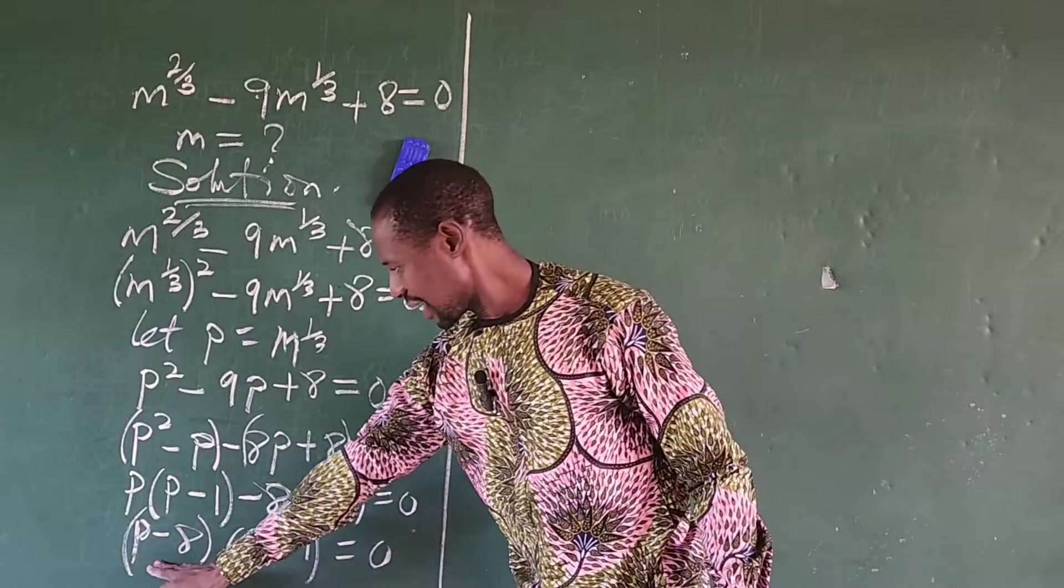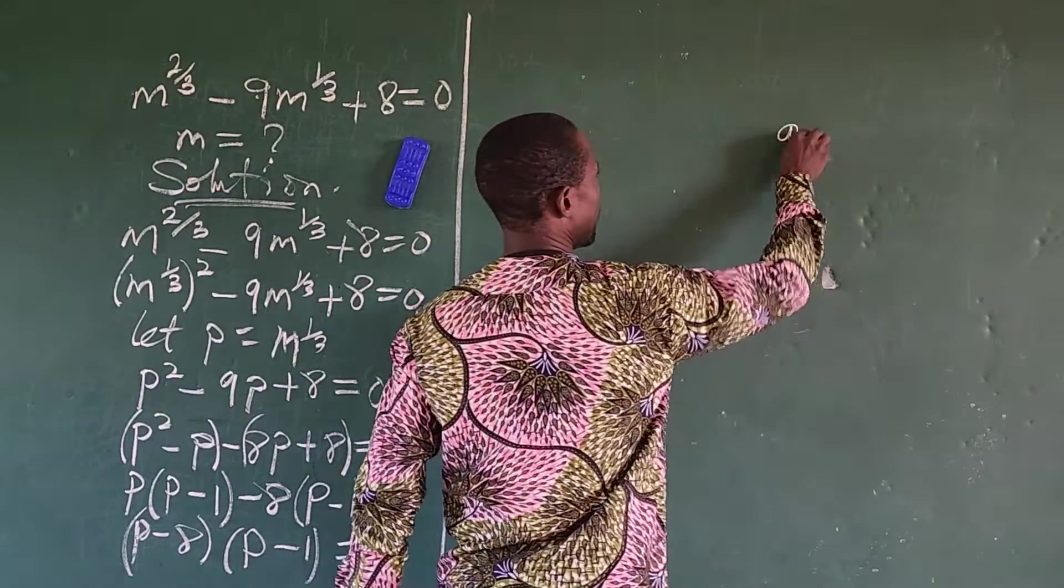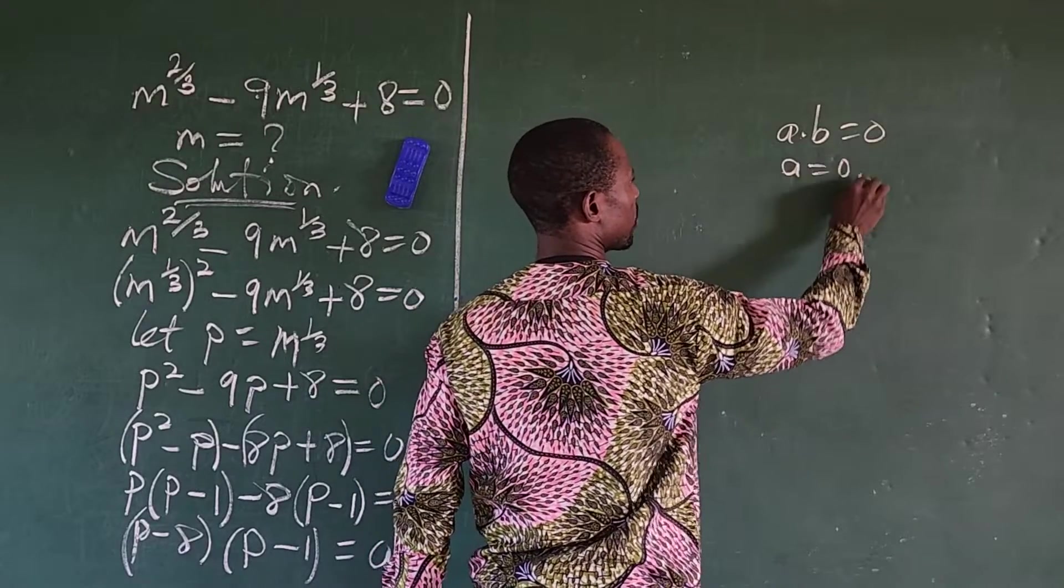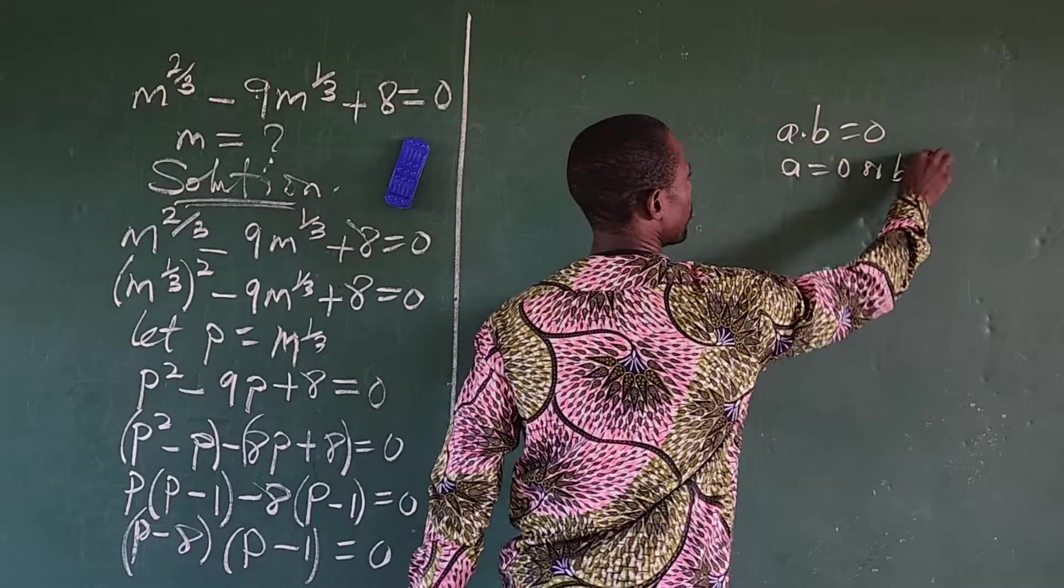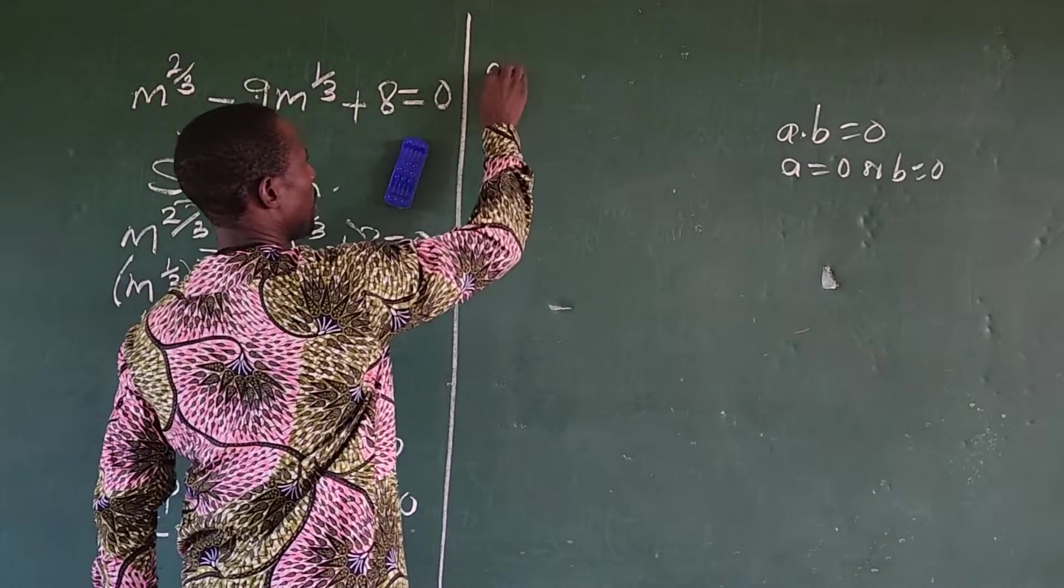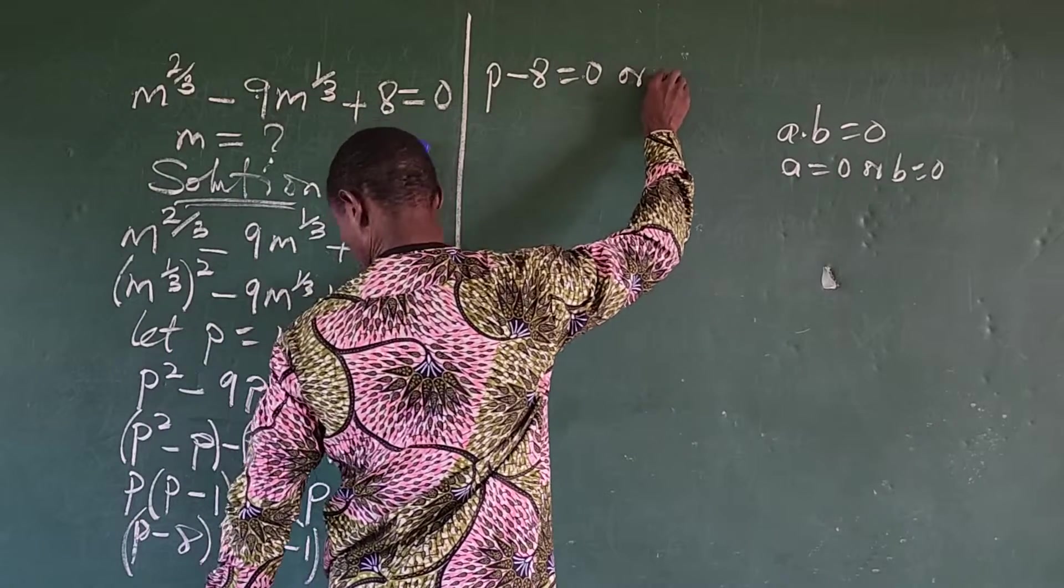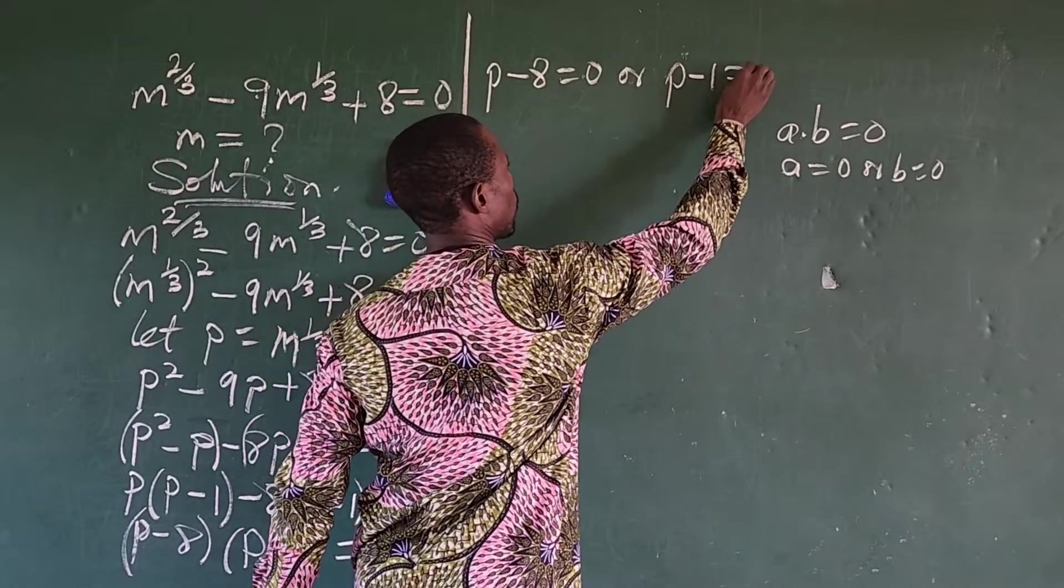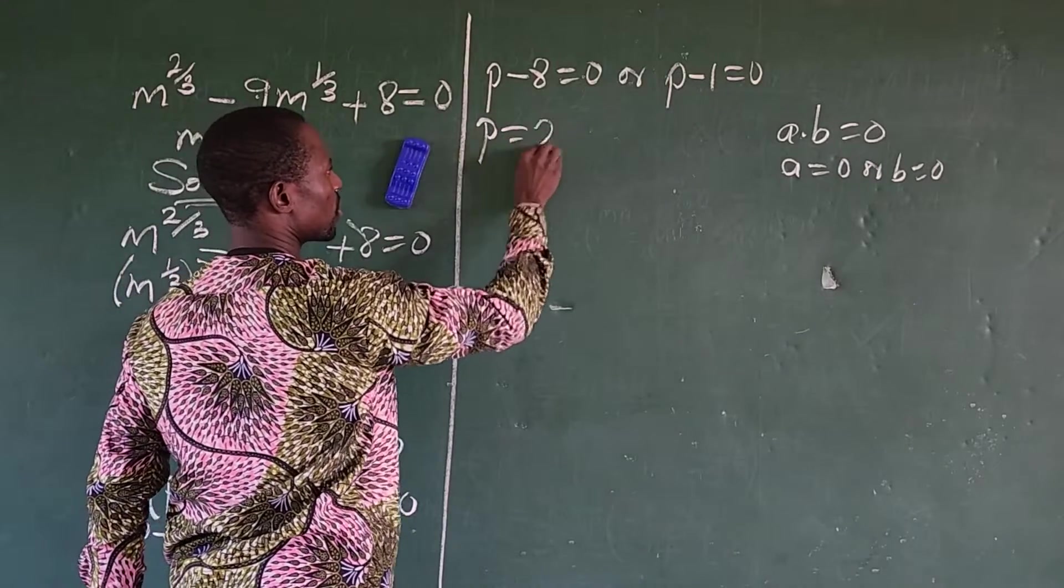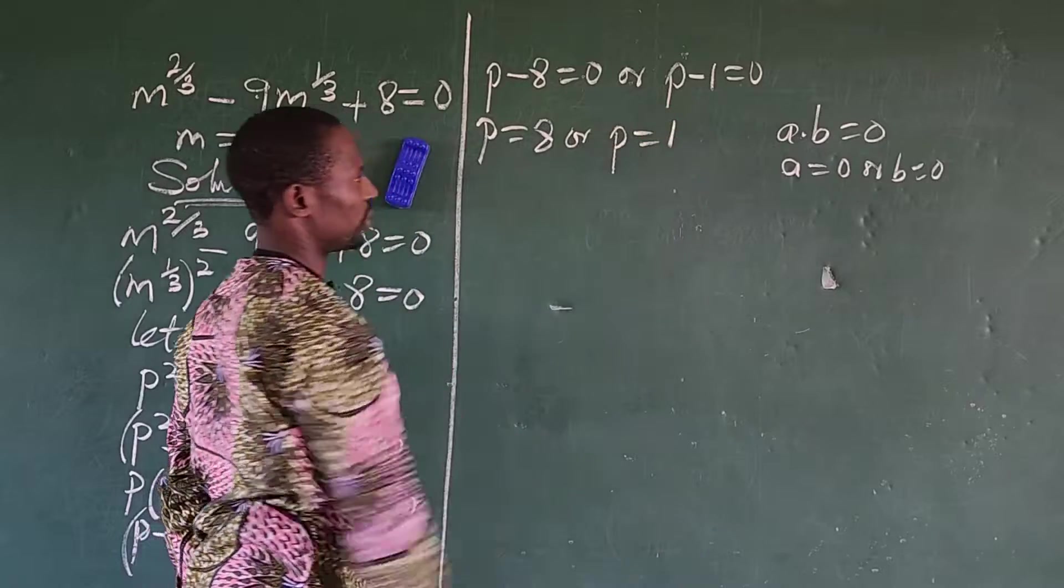So from here we now have p minus 8 bracket p minus 1 equals 0. So let's continue at this side. So at this point, we can now apply the zero product rule. We say that if you have a dot b equal to 0, this will give us a equals 0 or b equals 0.